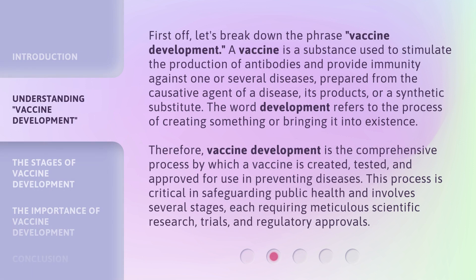First off, let's break down the phrase, vaccine development. A vaccine is a substance used to stimulate the production of antibodies and provide immunity against one or several diseases, prepared from the causative agent of a disease, its products, or a synthetic substitute. The word development refers to the process of creating something or bringing it into existence. Therefore, vaccine development is the comprehensive process by which a vaccine is created, tested, and approved for use in preventing diseases. This process is critical in safeguarding public health and involves several stages, each requiring meticulous scientific research, trials, and regulatory approvals.